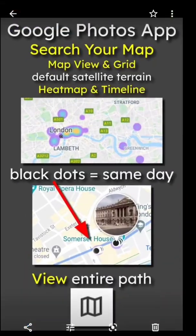Of course, you'll probably be most interested in your own photos. If you disable any locations in the photos or in the app it's not going to show as well. In conclusion, we have the Google Photos app on Android — watch out for the black dots and the heat map.